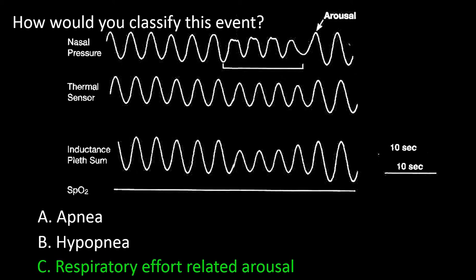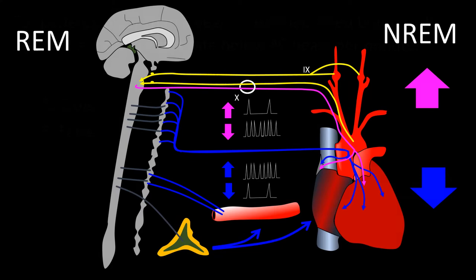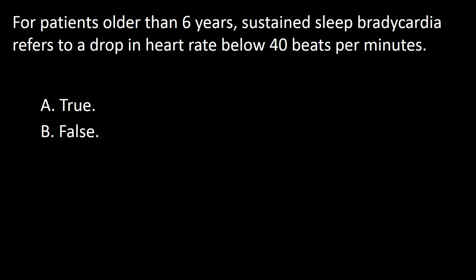Question: For patients older than 6 years, sustained sleep bradycardia refers to a drop in heart rate below 40 beats per minute — true or false? Bradycardia is defined as sustained heartbeat of less than 40 beats per minute. The word sustained is not precisely defined in the scoring criteria. Bradycardia is more likely to occur during non-REM sleep due to increased parasympathetic tone and sympathetic withdrawal. The answer is true.